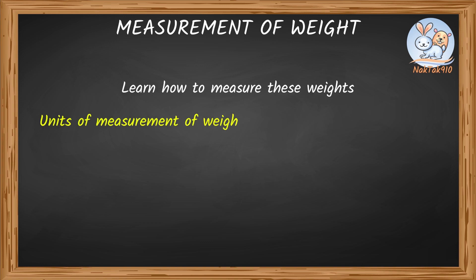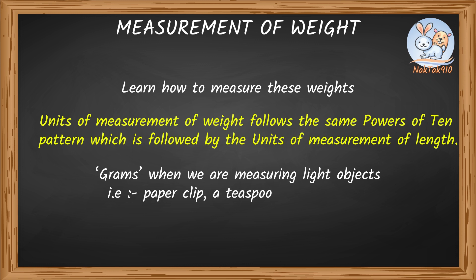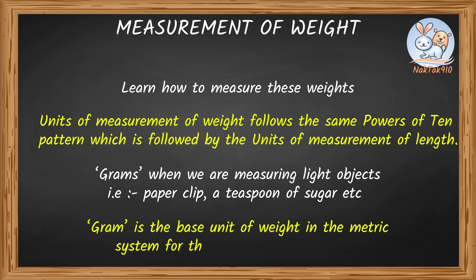Units of measurement of weight follow the same powers of 10 pattern which is followed by the units of measurement of length. We use grams when we're measuring light objects, such as paper clips, paper, a teaspoon of sugar, etc. Gram is the base unit of weight in the metric system for the measurement of weight.